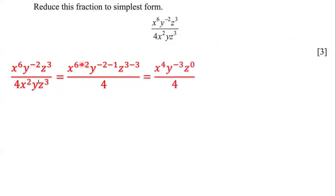Let's simplify. 6 minus 2 is 4, so that's going to be x to the power of 4. Negative 2 minus 1 is negative 3, so this is y to the power of negative 3. And 3 minus 3 is 0, so this is z to the power of 0. What we're left with is x to the power of 4 times y to the power of negative 3 multiplied by z to the power of 0, all over 4.